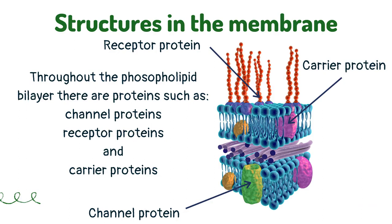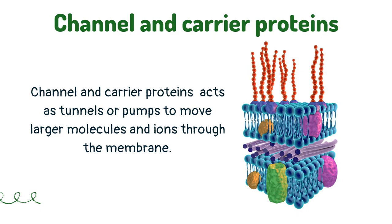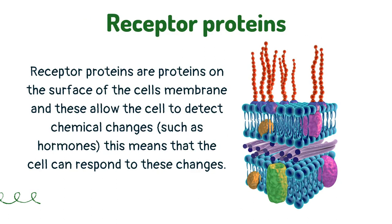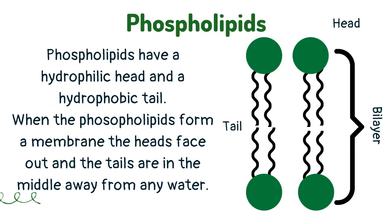Throughout the phospholipid bilayer there are proteins such as channel proteins, receptor proteins, and carrier proteins. Some of these proteins are fixed and others are able to move horizontally through the membrane. Channel and carrier proteins act as tunnels or pumps to move larger molecules and ions through the membrane. Receptor proteins on the surface of the cell's membrane allow the cell to detect chemical changes such as hormones, meaning the cell can respond to these changes.